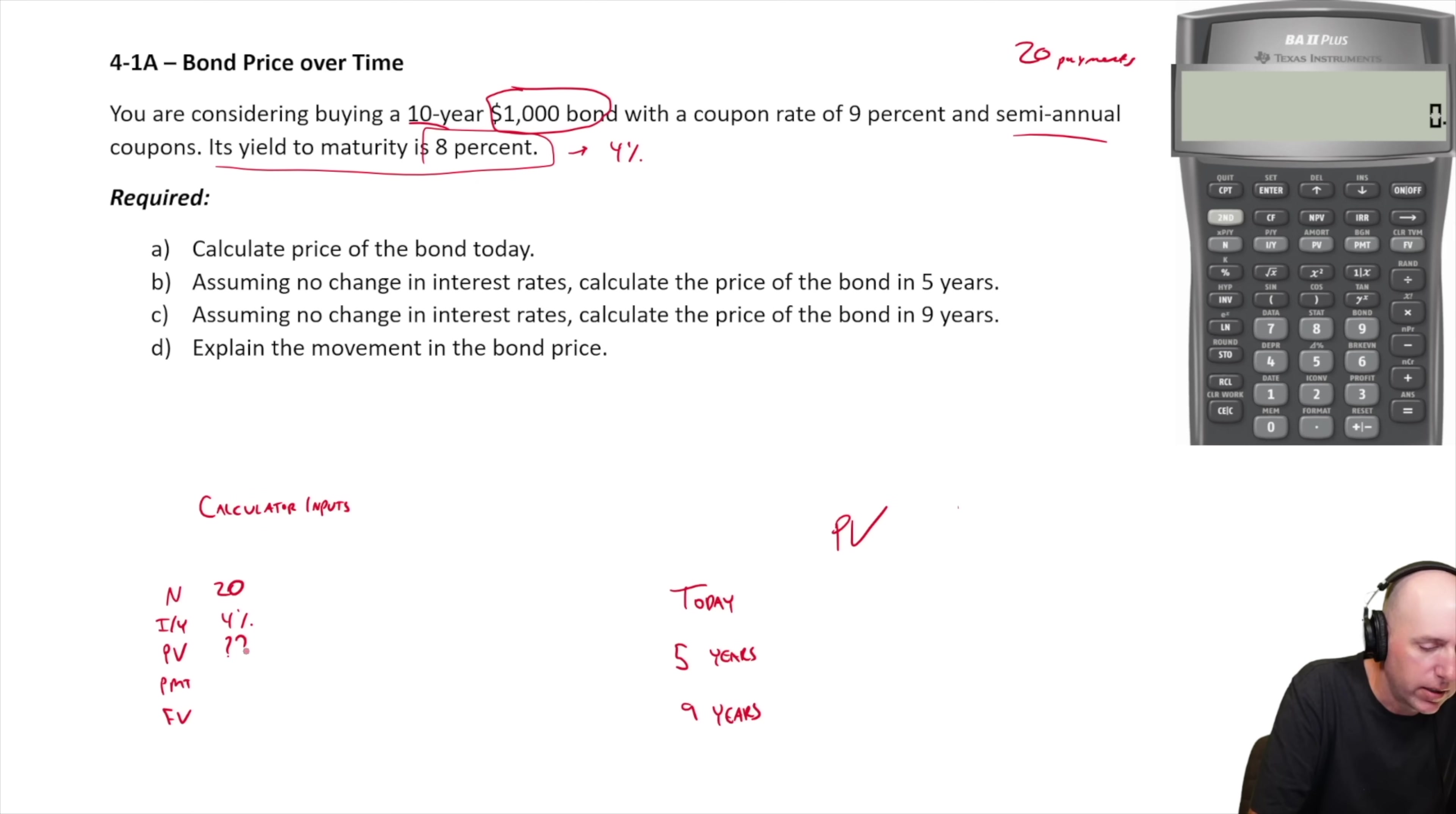Our PV is unknown. That's what we're solving for. Our payment amount is what we promise. And what we promise is the coupon rate. So it's a $1,000 bond, 9% coupon means it's a $90 payment. But the fact that it's semi-annual, this is $90 per year. Divide by two to get your payment, which is $45 per six month period.